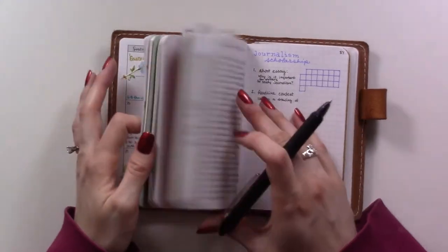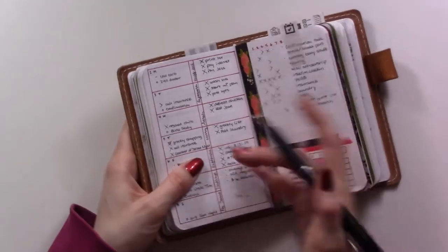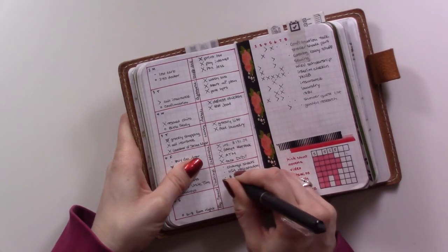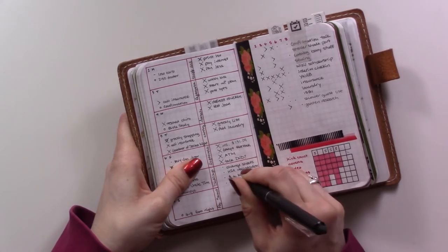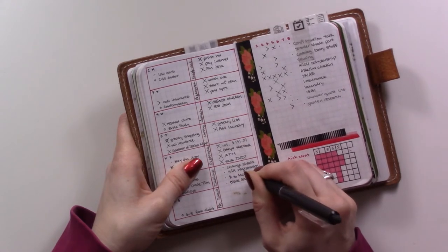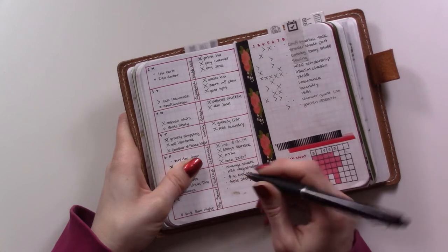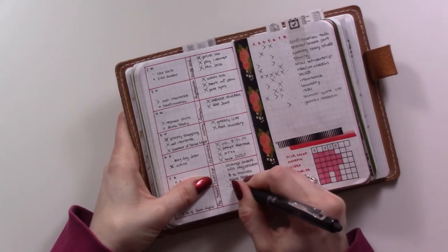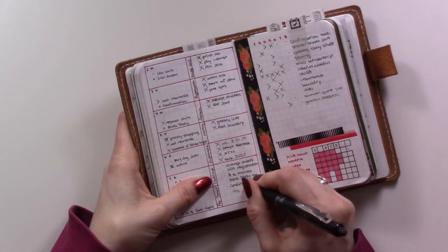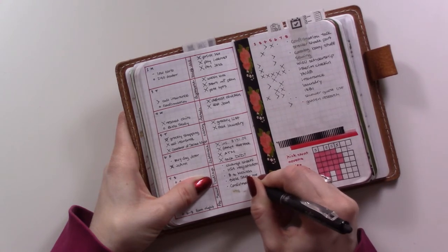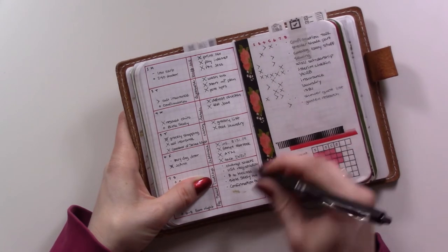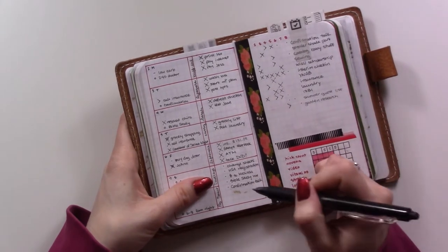Actually I should put that on here: Bible study homework. That's due on Wednesday night, and then even before that is my confirmation talk because that's due Tuesday night. So I'm going to work on both of those on Sunday because we have some more free time on Sunday than we do on Saturday. And yes, this is written in two places at once, but that just means that it's really important.